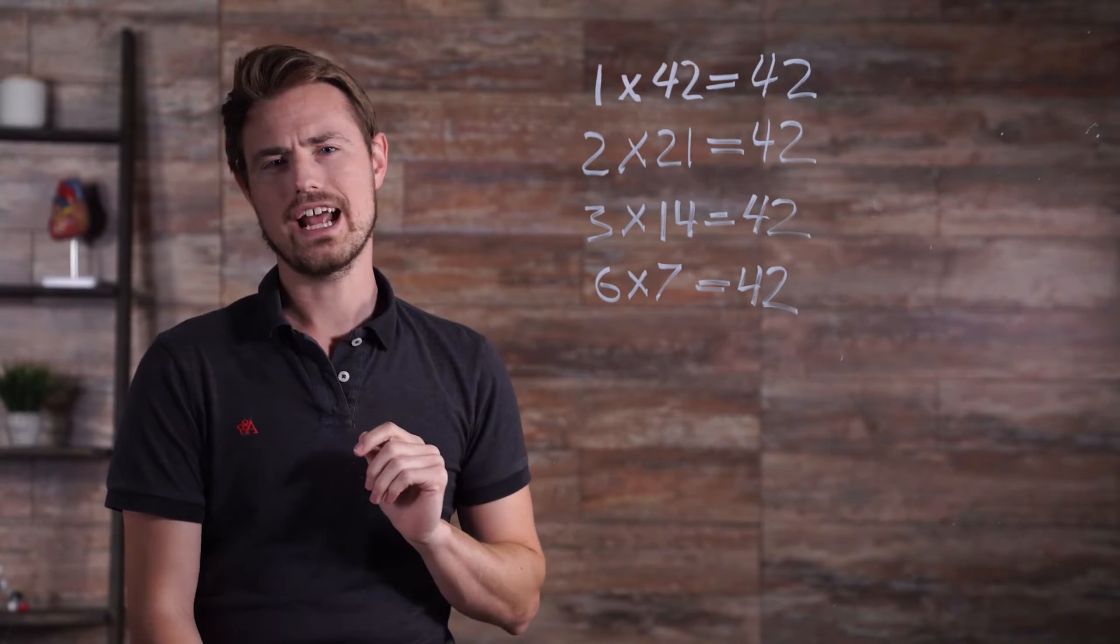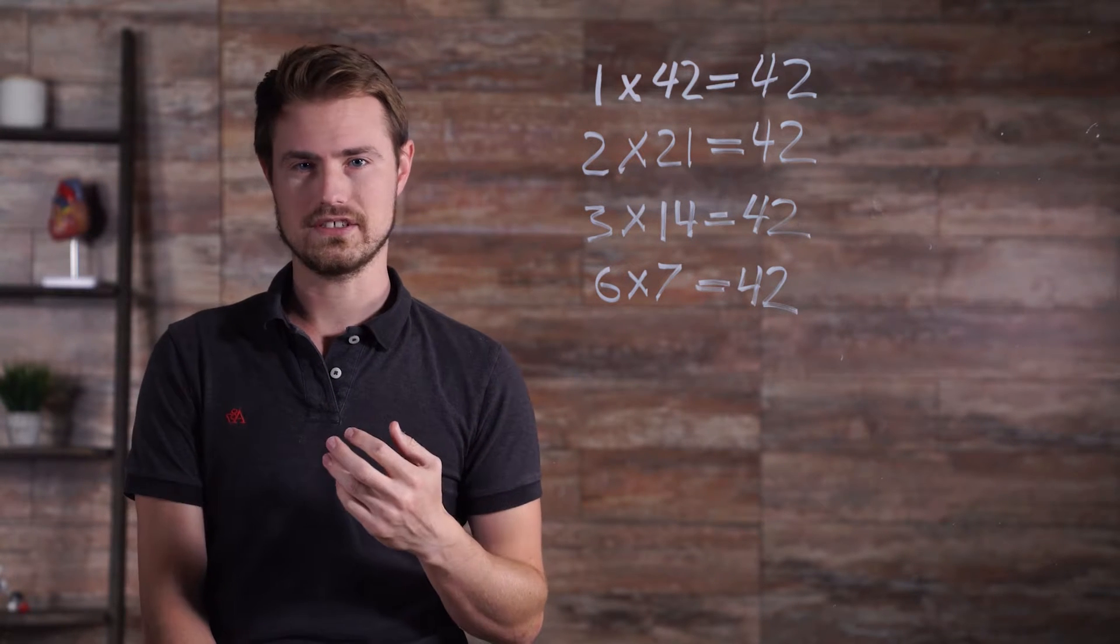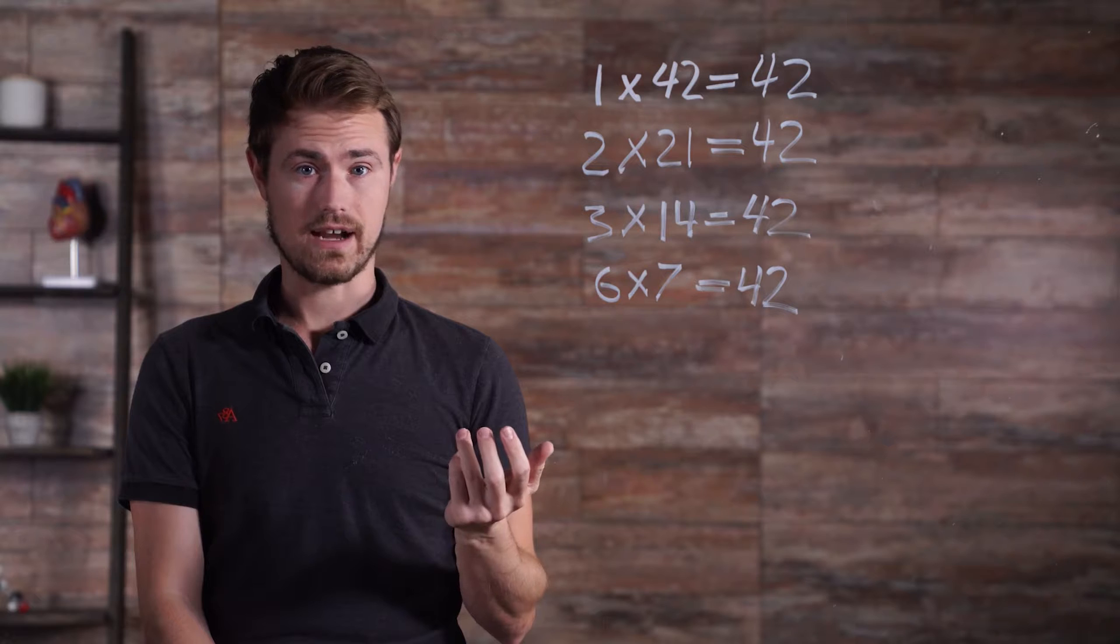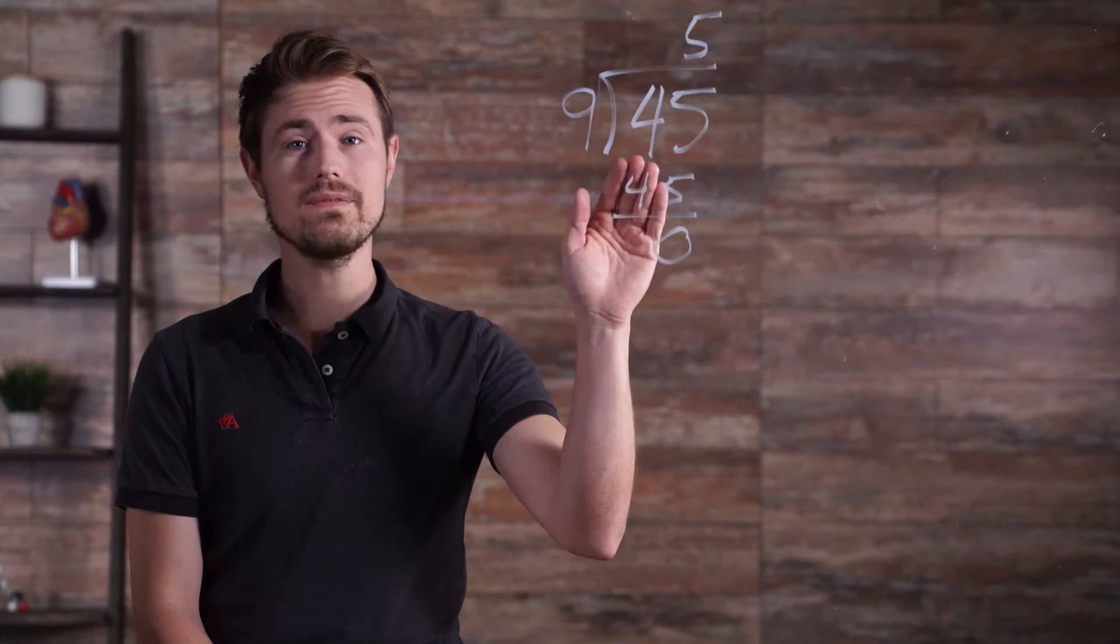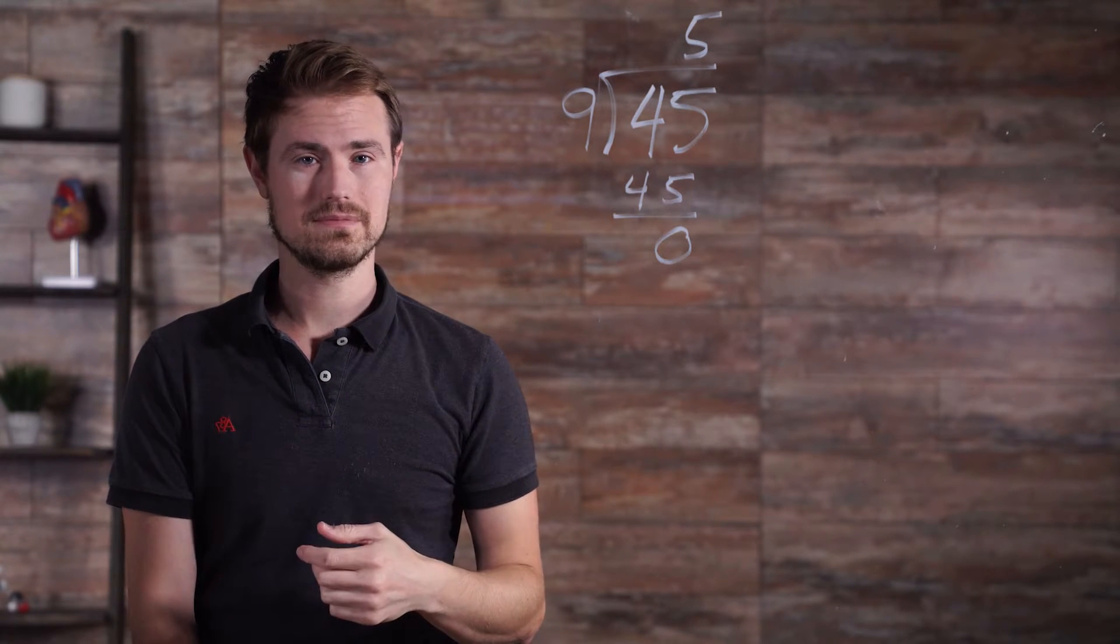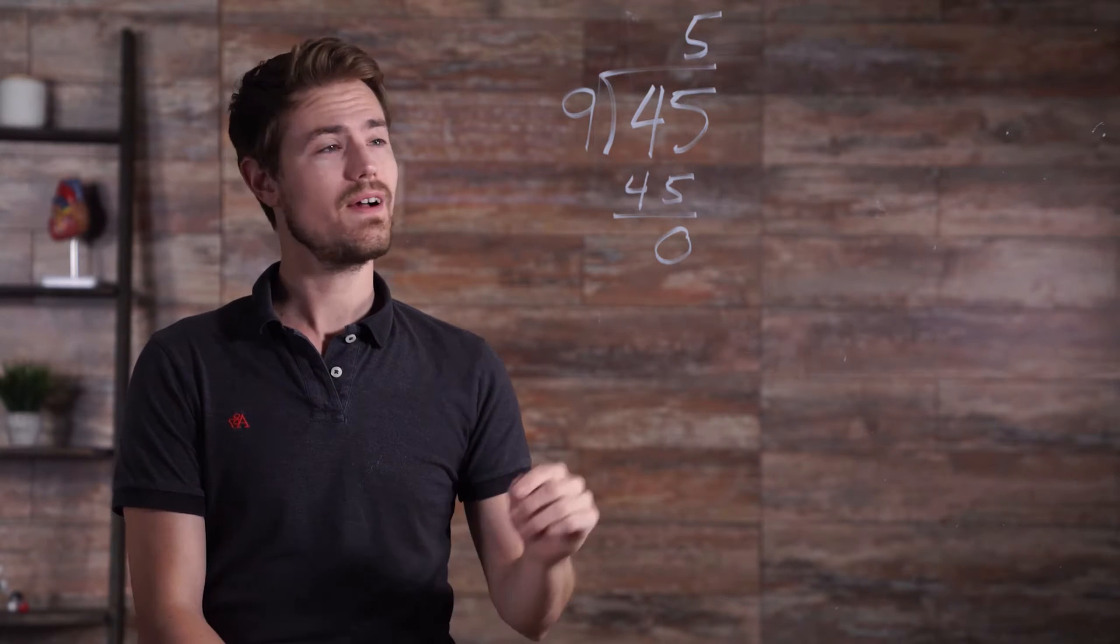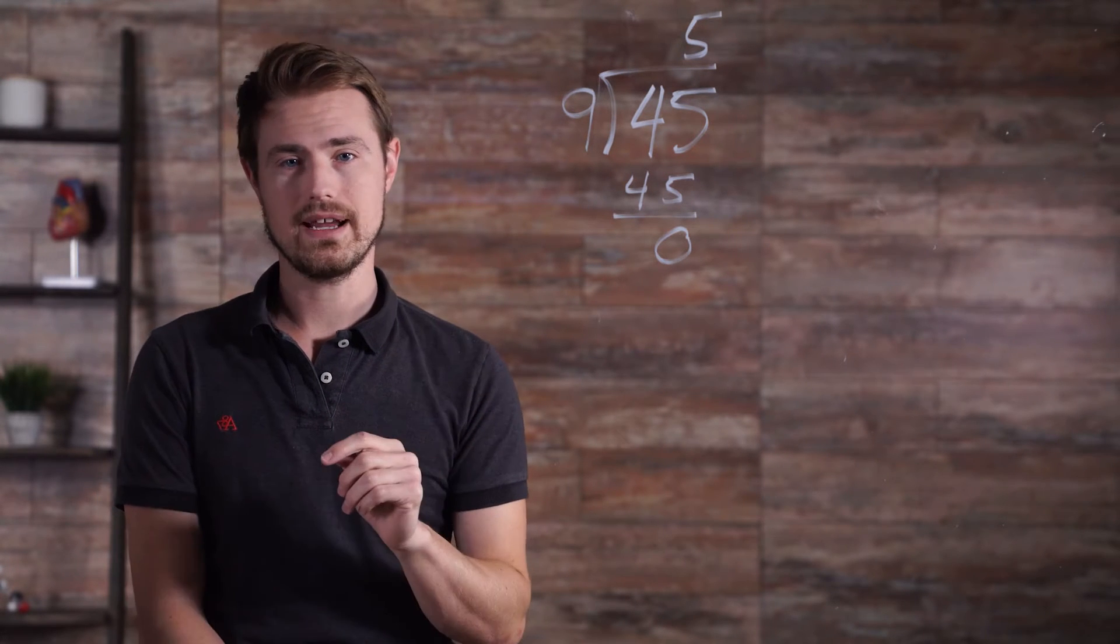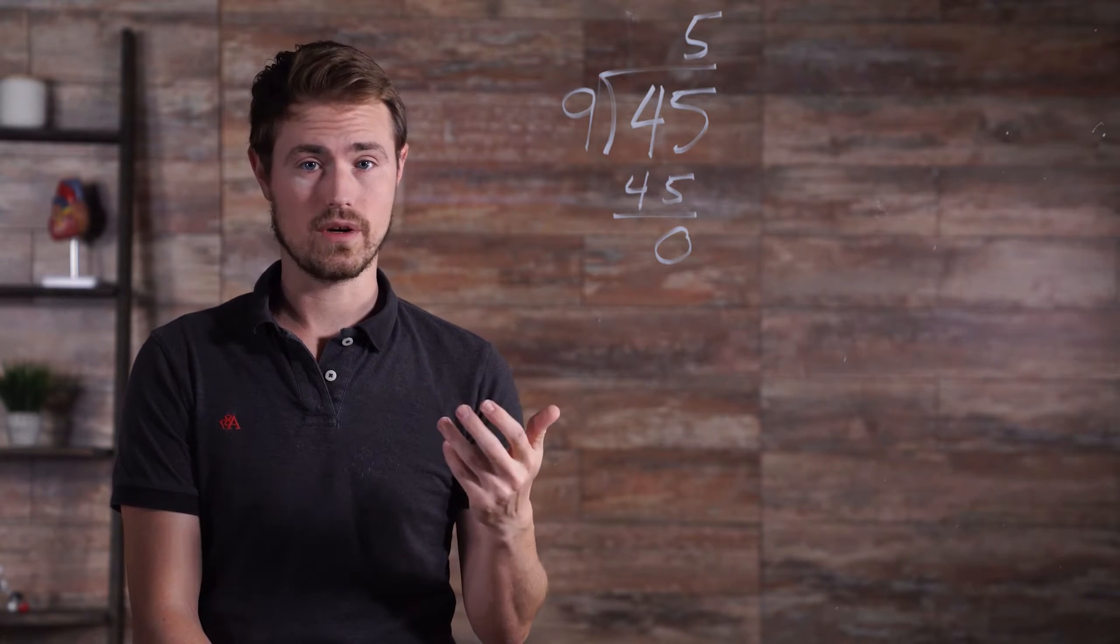Another way that we can look at this is through division. Let's say you are asked the question, is 9 a factor of 45? Well to find out, you can divide 45 by 9 and determine whether or not the remainder is 0. In other words, is your answer a whole number? If you find a number with a 0 remainder, then both 9 and that number are factors of 45.